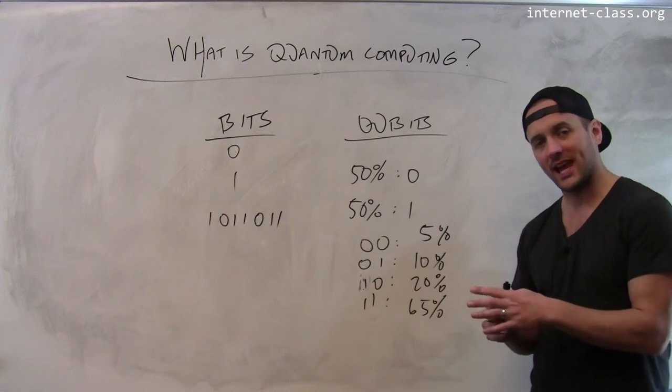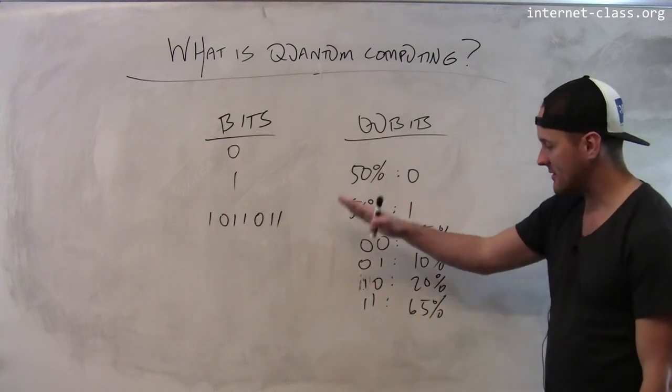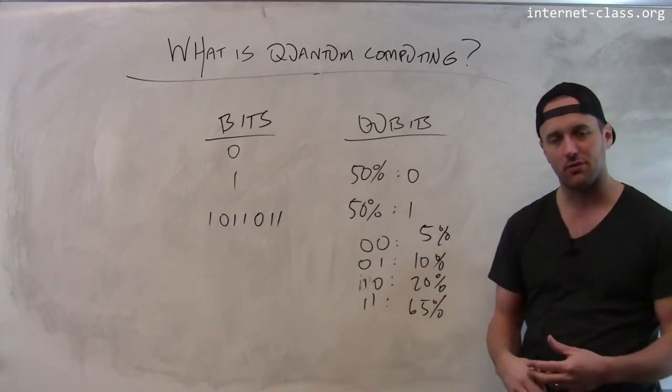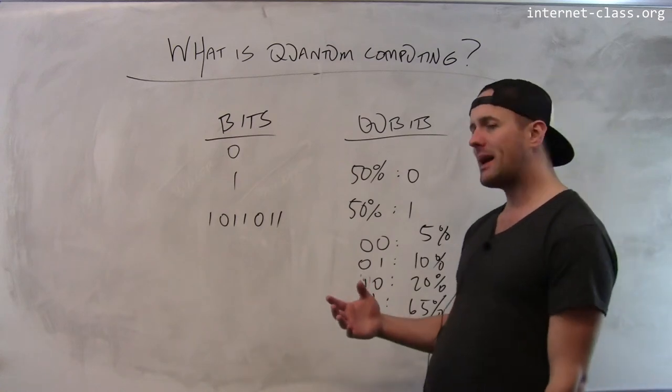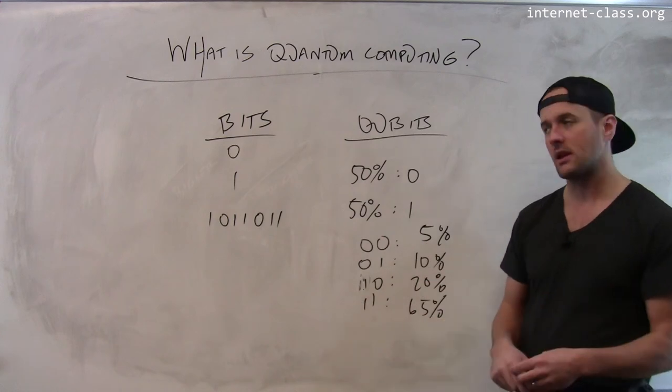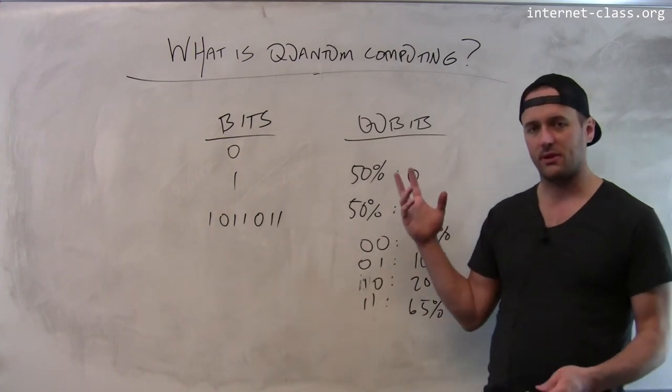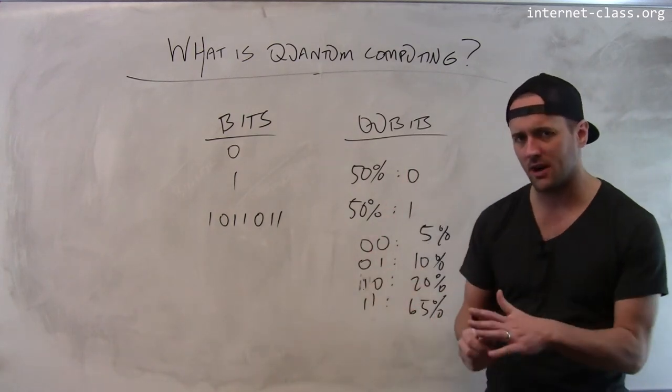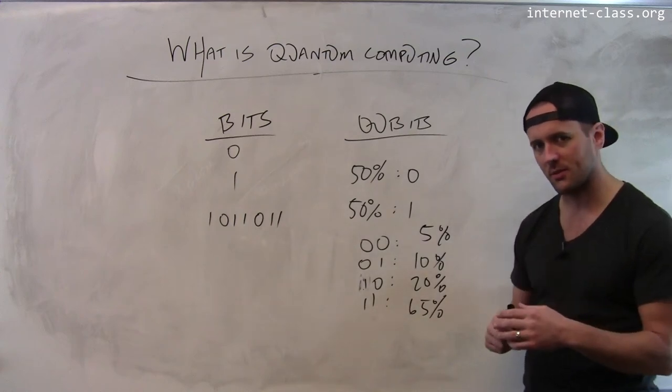Quantum computing is this idea of can we design a computer that's based on this probabilistic representation of data. Now you might ask, why would I do this? This seems really difficult because it is clearly difficult. We haven't been able to design quantum computers that do much more than very simple things. This whole field is still very much in its infancy.